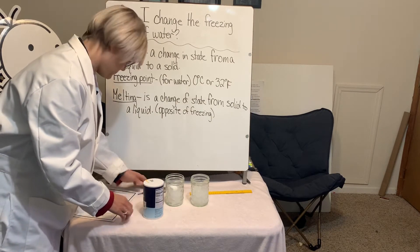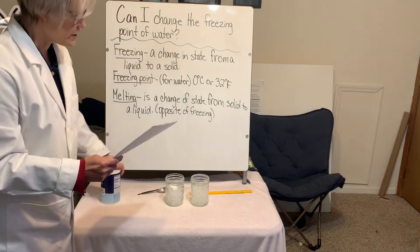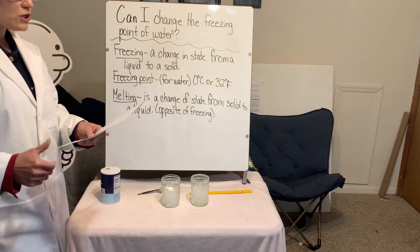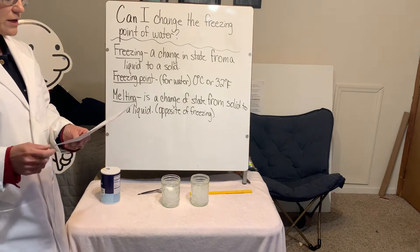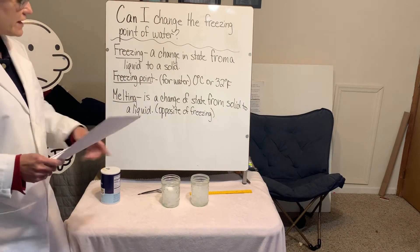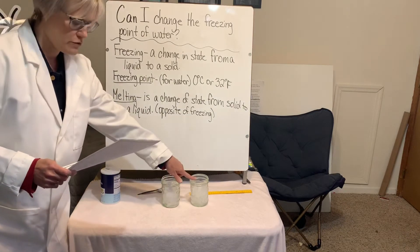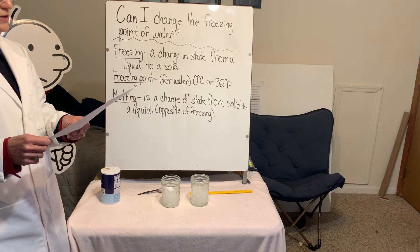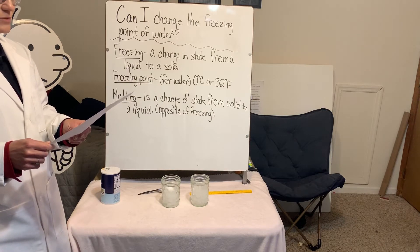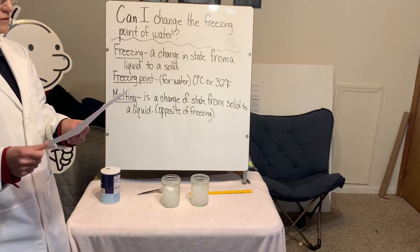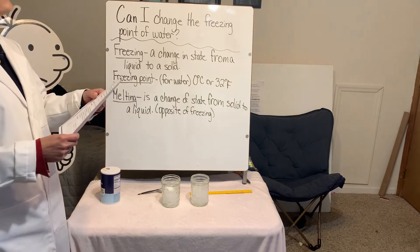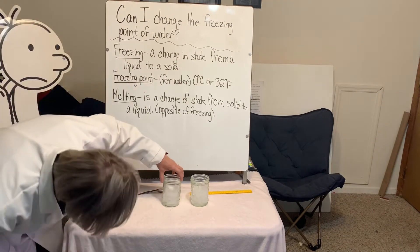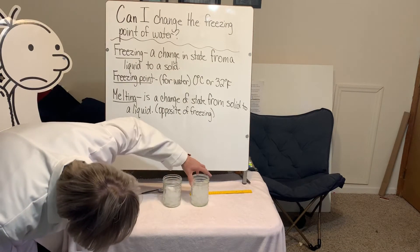Observe the two cups every five minutes for 20 minutes. Look to see which cup is melting faster — the one with the salt or the one without. This can be observed by looking at how much water is collected at the bottom of each cup. Use the ruler to measure the amount of water, then record the data on your sheet.